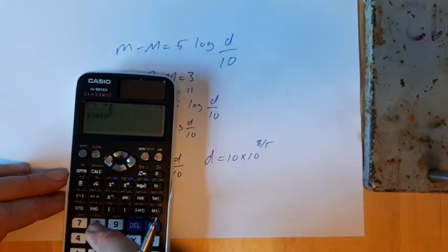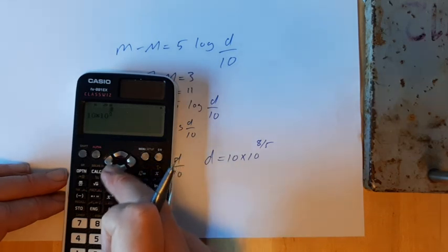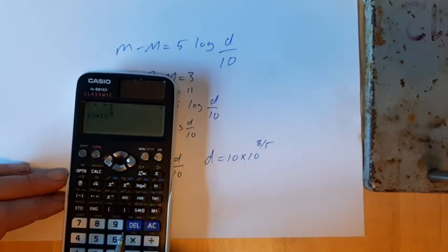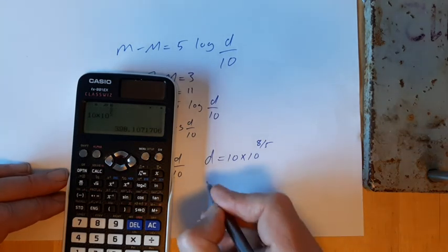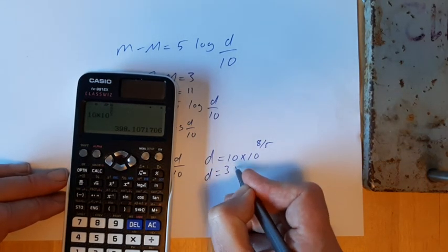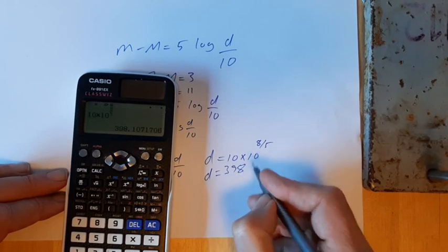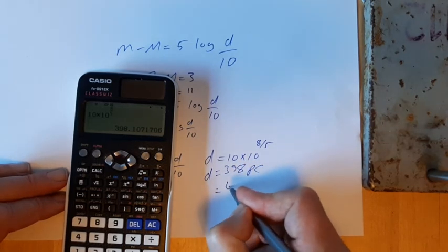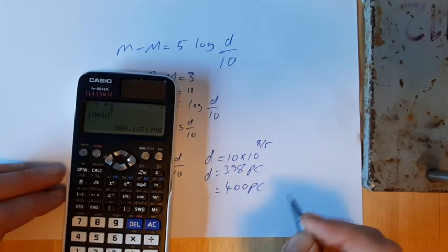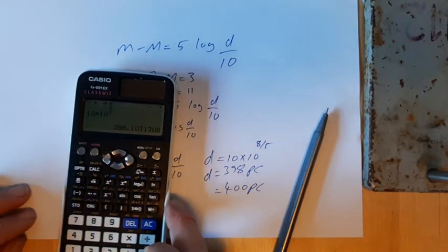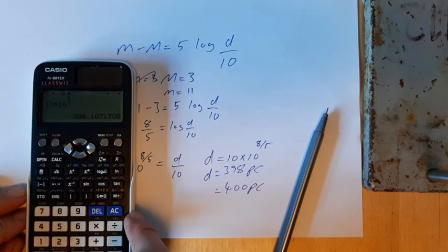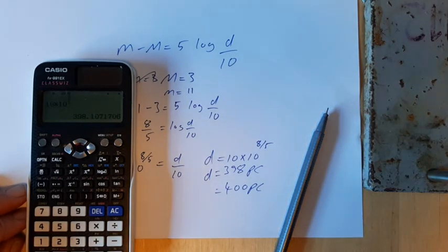And that gives me just as I expected a number greater than 10. So I think we can basically call that 400 parsecs. I'll just confirm the answer in the back before I publish the video. I hope that gets you started on this. Thank you very much.